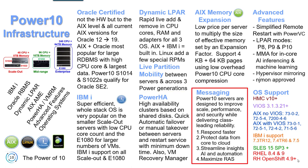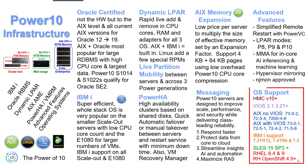The key marketing messages for Power 10 machines are: designed to improve scale, performance, and security while delivering class-leading reliability; fast response to protect data from core to cloud; streamlining insights for AI; and streamlining automation and maximum RAS. The supported operating systems are listed on screen — you can pause to read them, as these will change as the video ages. IBM Lab Services has a great team that can help you upgrade. Note we can run in Power 8 mode; if you're still on Power 7 mode, you really need to upgrade by now.